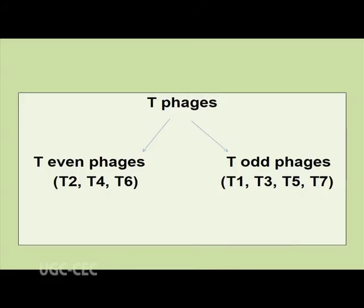T2, T4, and T6 are called T-even phages. All of them infect different strains of E. coli and follow the lytic cycle.